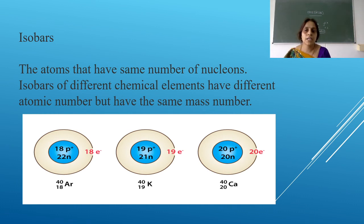The next is isobars. The atoms that have same number of nucleons. A different word you have heard now, nucleons. What do you mean by nucleons? It is nothing but protons and neutrons. So they have different elements. So there are different elements. They have different atomic number but they have the same mass number. You can see the picture over there. Argon, the mass number is 40, atomic number is 18. Potassium, 40, it is 19. Calcium, 40 and it is 20. So they have same mass number. Means the number of protons and electrons will be same.